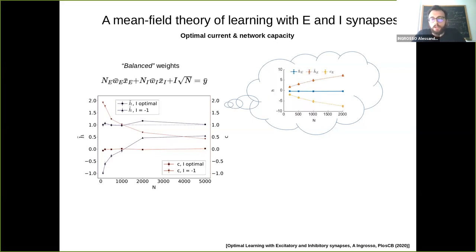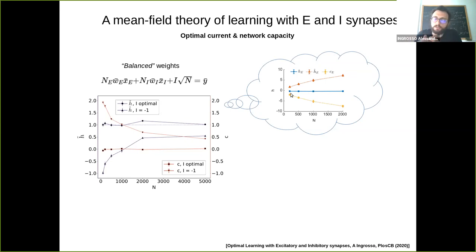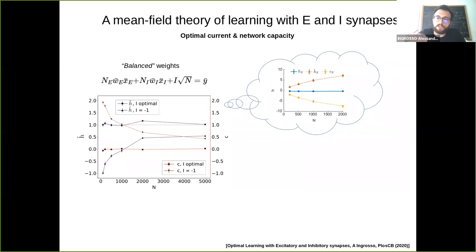This balance only works if you optimize over the bias. Without a learned bias, the total current stays of order one as a function of N, but the contribution h-tilde grows as order sqrt(N) and is balanced by correlations between the rates and the deviations of weights from their averages. Without bias optimization you don't get a balanced network, losing the interesting dynamical properties. In this simple model, optimizing the external current already determines whether the solution is balanced or not.